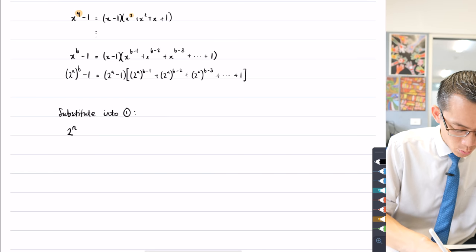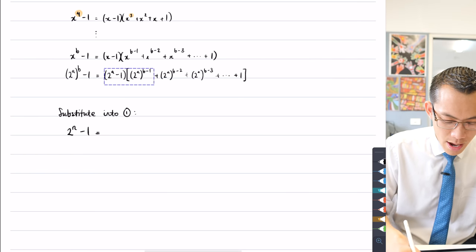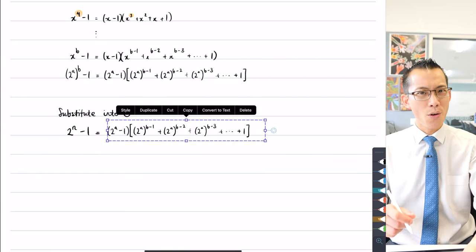2^n - 1, instead of writing it as 2^(ab) - 1, I'm going to take everything here and duplicate that down. So where does this leave me?